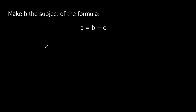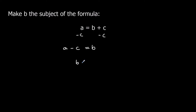To make b the subject of a formula we need to get b by itself. At the moment b is with c and it's plus, so it's b plus c. To get rid of a plus we do the opposite, which is take away, so we take away c from both sides. That gives us a minus c equals b, so b is now the subject of the formula — we can write it the other way around: b equals a minus c. B is the subject of the formula because it's in the form b equals.